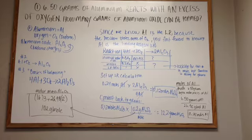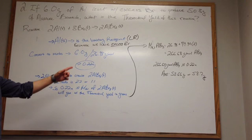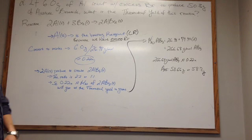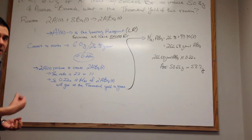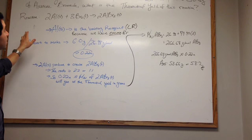Problem 2 states that if 6.0 grams of aluminum react with excess bromide to produce 50.3 grams of aluminum bromide, what is the theoretical yield of this reaction? So usually, we have to always find that the equation has to be balanced. In this case, the reaction that they give us, the equation is balanced.